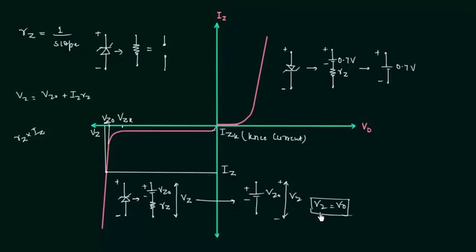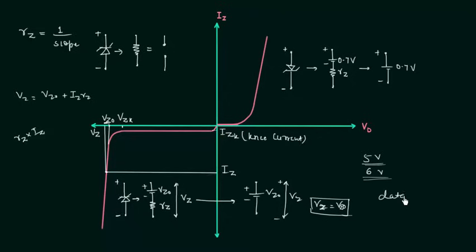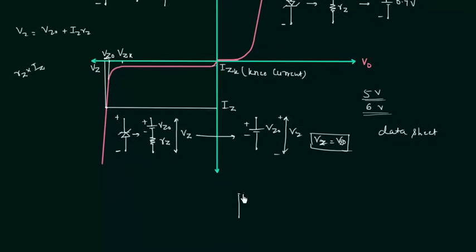We can easily obtain the Zener voltage if we have these values. If we consider RZ to be very small, then we have the simplified model where VZ is equal to VZ0. The Zener voltage equals VZ0, and VZ0 is already mentioned in the specification sheet. So if you need 5 volts or 6 volts of constant voltage across any resistance, you can connect the Zener diode across the resistance and apply reverse bias potential — you will get that constant voltage, confirming that the Zener diode acts as a voltage regulator. VZ0 and power dissipation are the most important values mentioned in the data sheet.